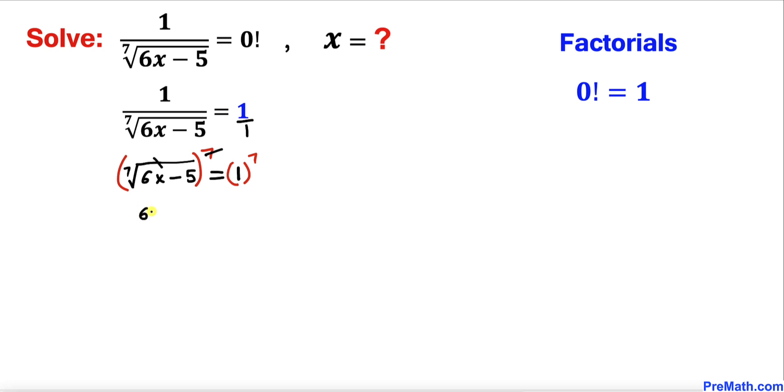Let's add 5 on both sides so this negative 5 and positive 5 is gone. So we got 6x equals to 6. Now let's go ahead and divide both sides by 6.